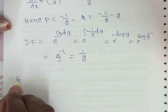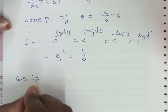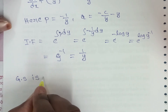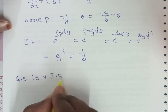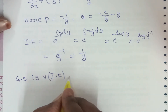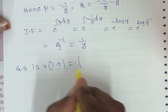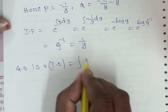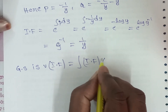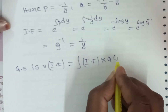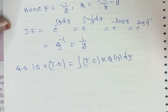The general solution is: v × IF = ∫(IF × Q) dy. That is, x² × (1/y) = ∫(1/y) × (-c/y - y) dy.